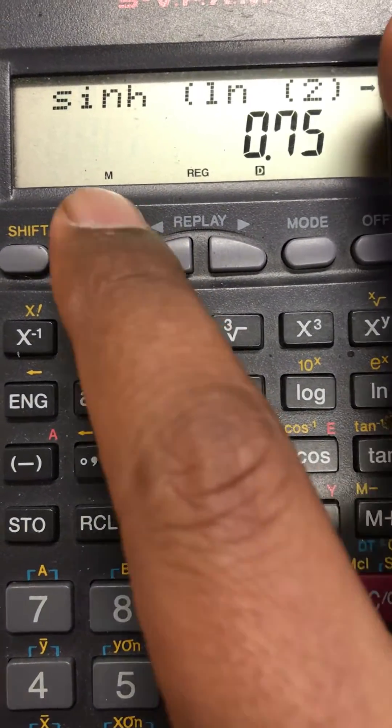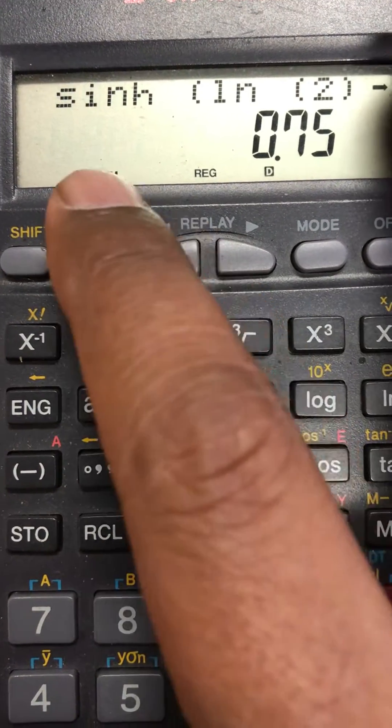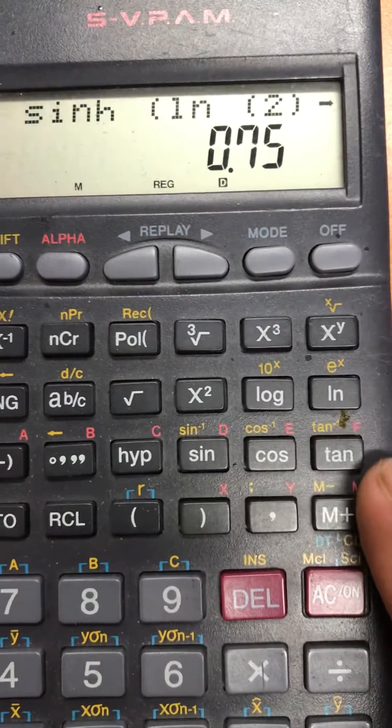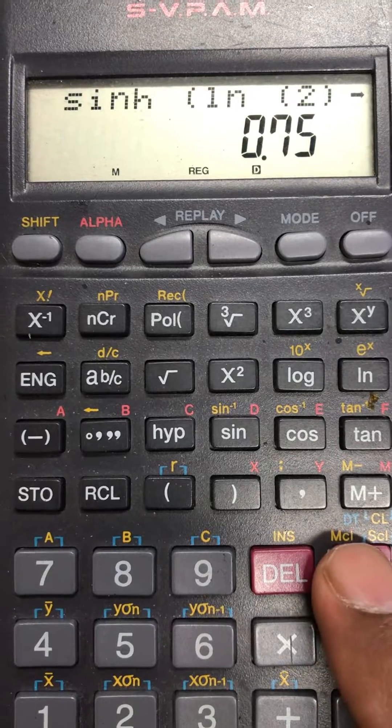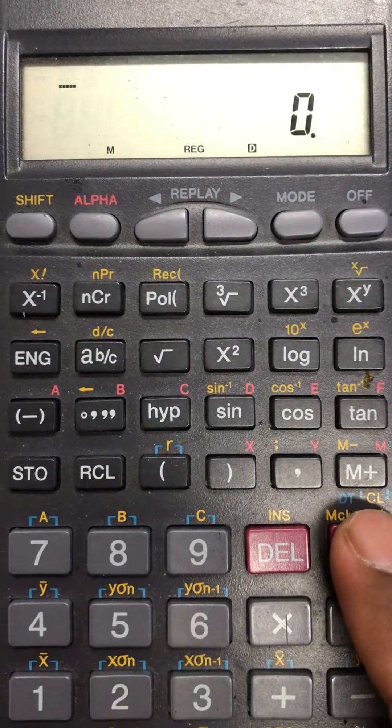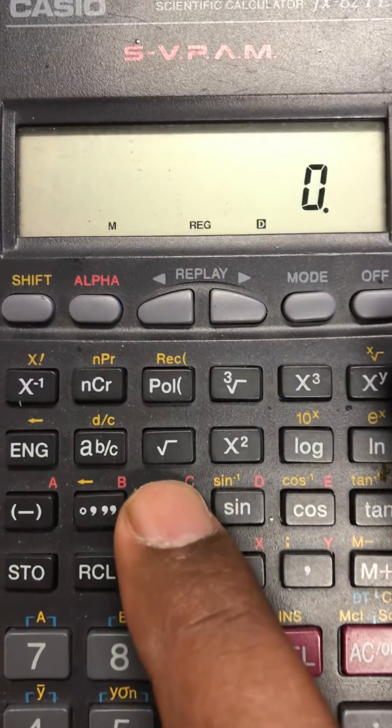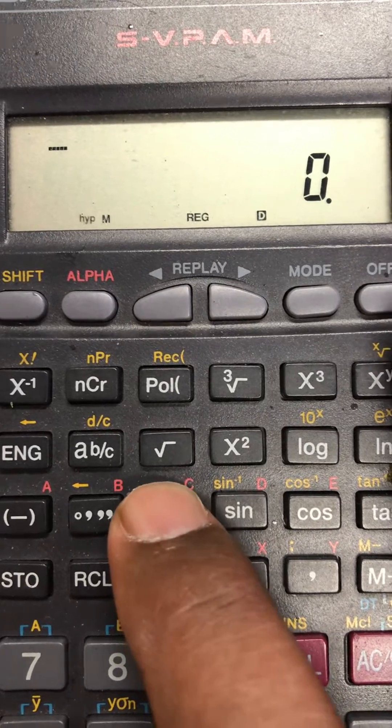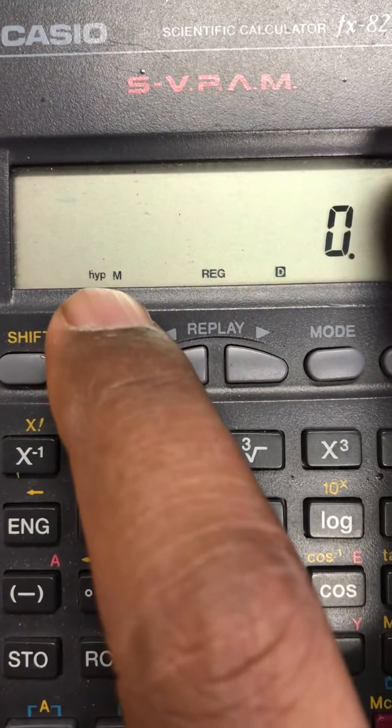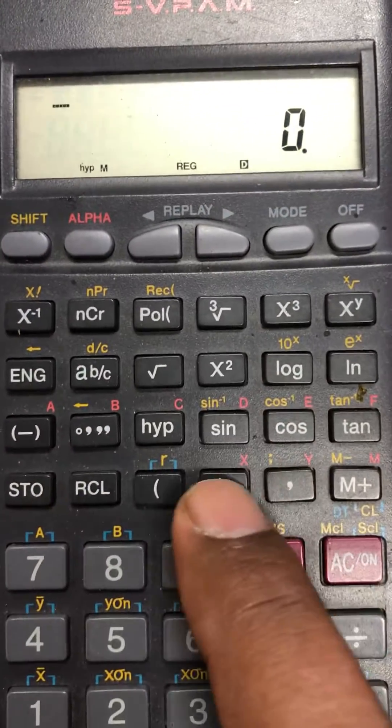As soon as you get 0.75, the hyperbolic function from the screen has disappeared. That means you have to press it again to find hyperbolic of any other function. If you want to find hyperbolic of a cosine function, similarly press hyperbolic and you get the HYP letters. Remember you have to...